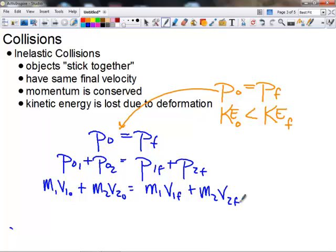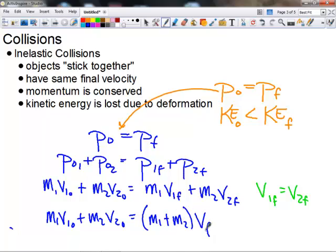we know that v1f equals v2f. Therefore, we can just say vf is the final velocity of both the objects, and we can come up with an expression for the conservation of momentum of our system by just saying m₁v₁₀ plus m₂v₂₀ equals (m₁ plus m₂) times vf. So that's the expression you'll use when you have an inelastic collision where they have the same final velocity.